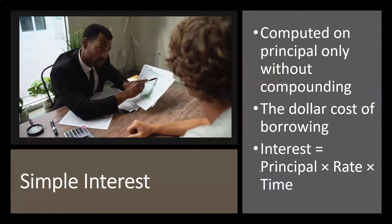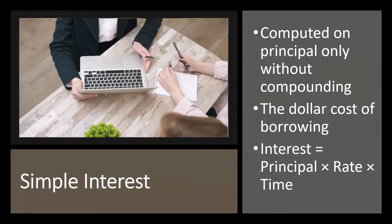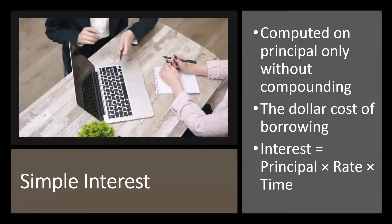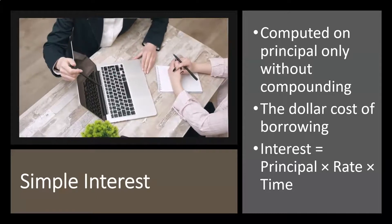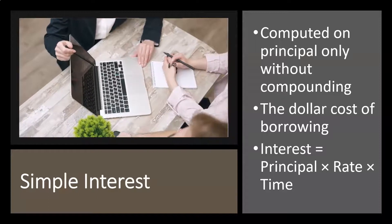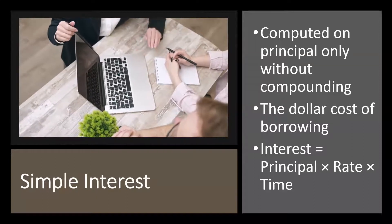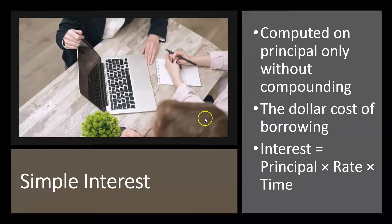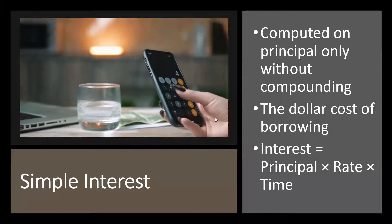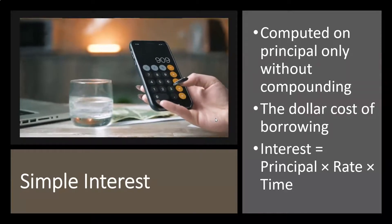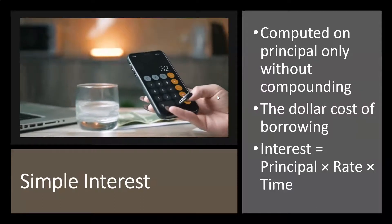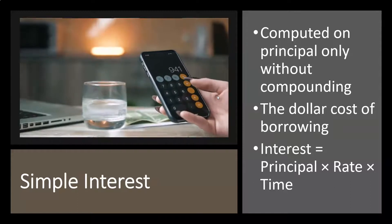The principal represents the loan amount outstanding. For example, if the principal is $1,000, and the rate — which is generally a yearly rate unless stated otherwise — is 5%, that's times 0.05, giving us $50. If that's a yearly calculation, times one year, the interest is $50.